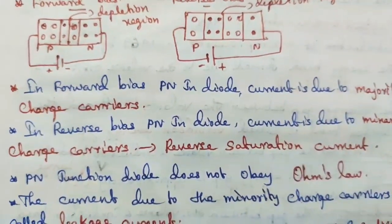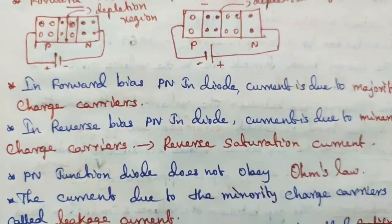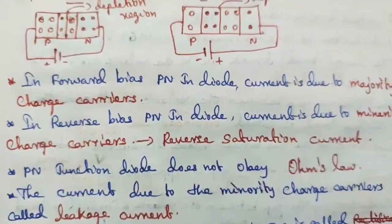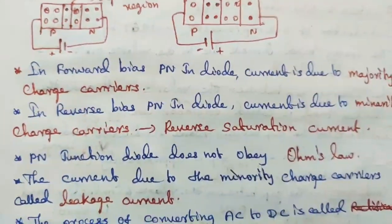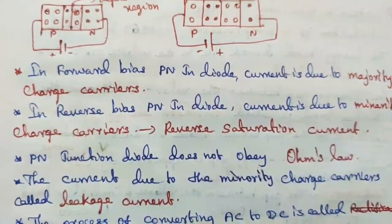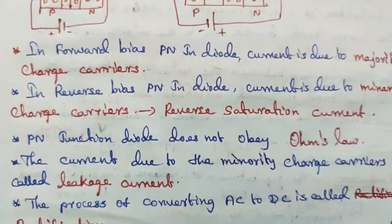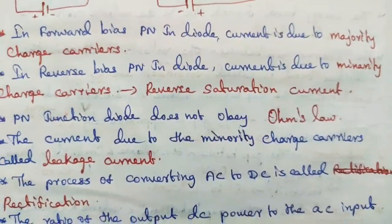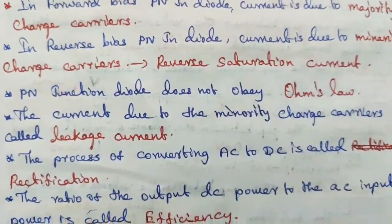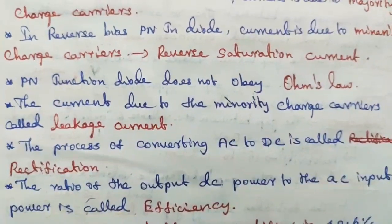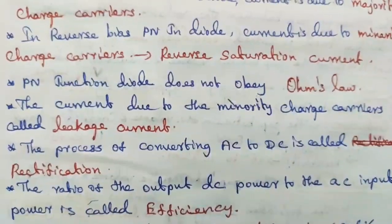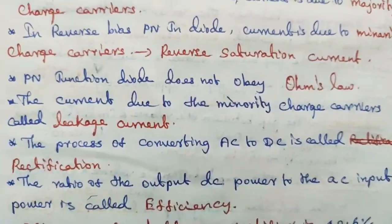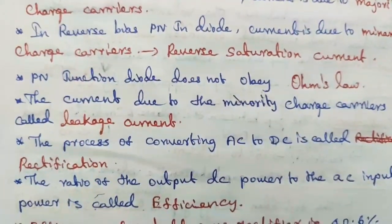P-n junction diode does not obey Ohm's law because the graph plotted in p-n junction diode in forward bias is not a straight line. The current due to the minority charge carriers is called leakage current. The process of converting alternating current to direct current is called rectification. The device which is used to rectify or to convert AC to DC is called rectifier. P-n junction diode acts as a rectifier.